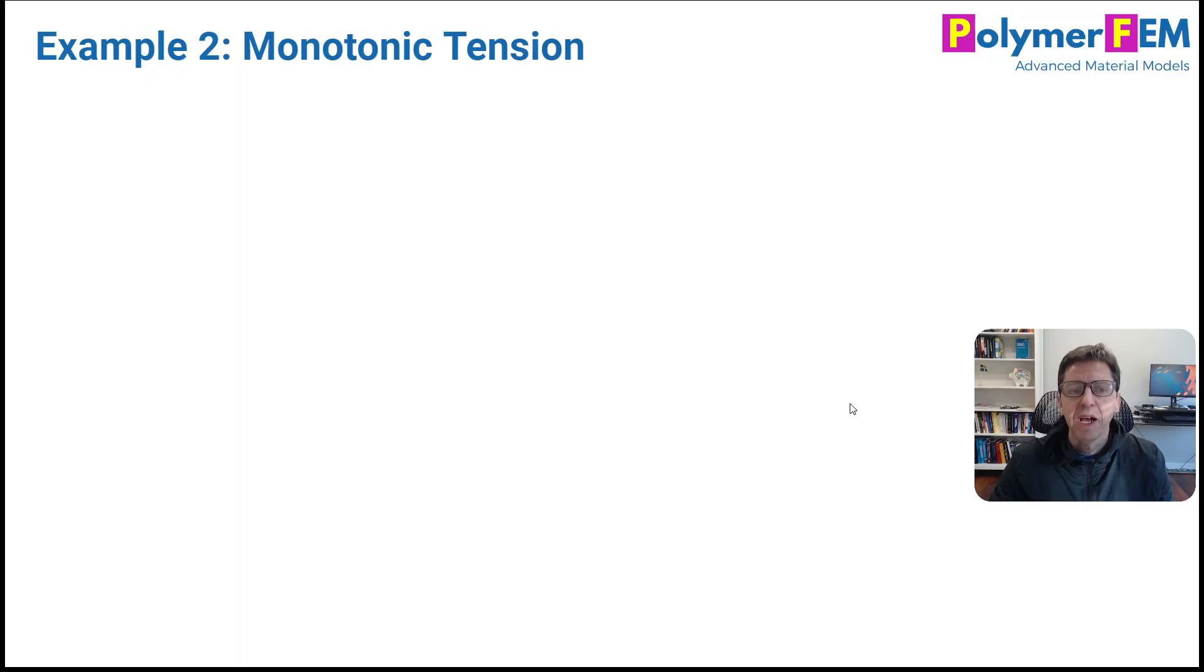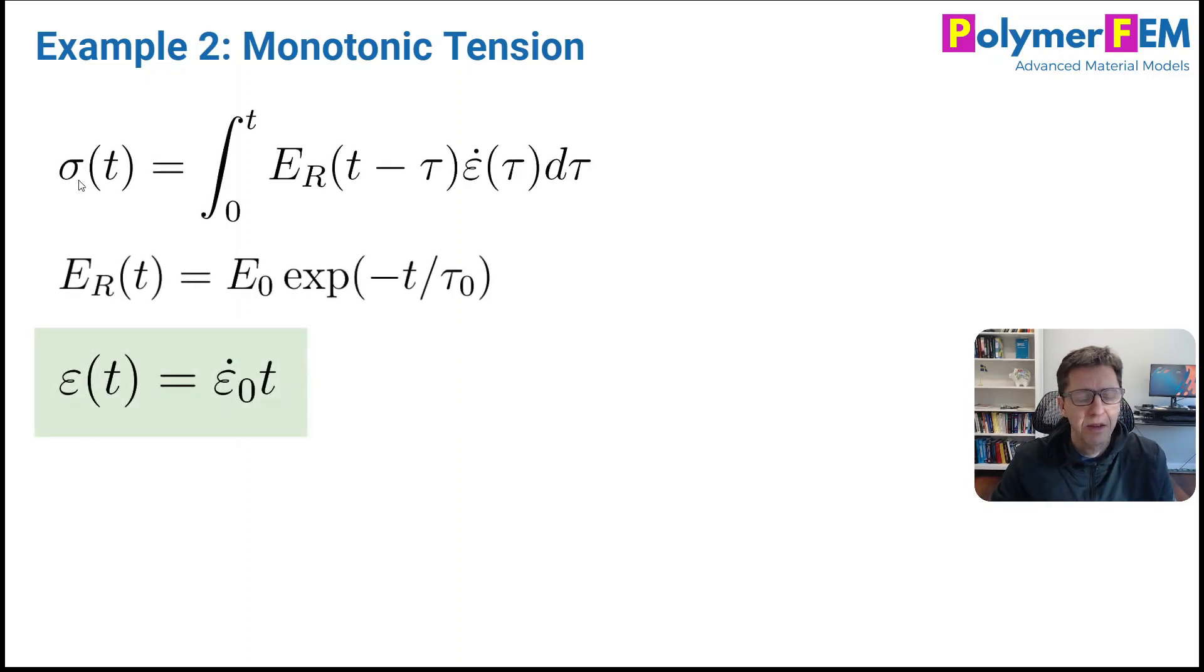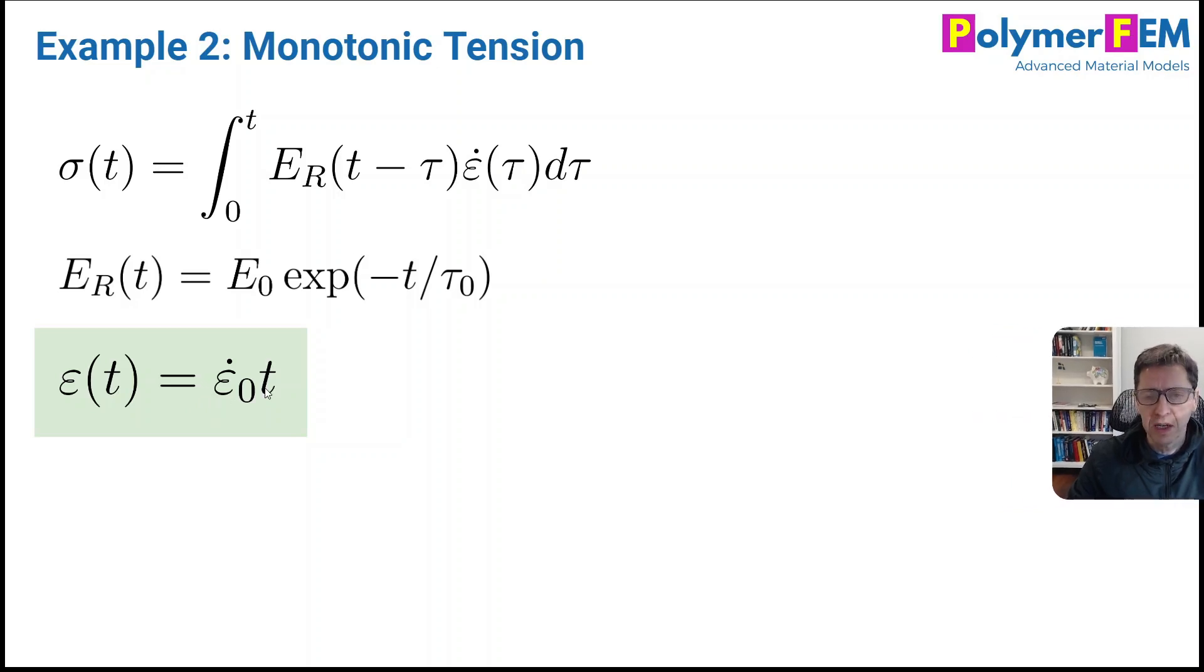In my second example, I'm going to take the master equation we have, and I'm going to consider a case of the monotonic tension. It continuously increases the strain. And we have our master equation here. I'm going to assume the same relaxation modulus in this case. I'm going to say that the strain is equal to a constant strain rate times time.